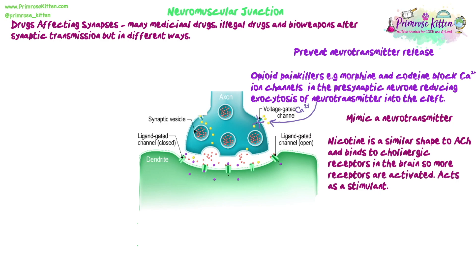Another example: instead of blocking a signal, drugs could mimic a neurotransmitter. Nicotine is a similar shape to acetylcholine, so it can bind to the cholinergic receptors. More receptors are activated if you have nicotine in your system than if relying on acetylcholine alone, so it acts as a stimulant — binding to more sodium ion receptors releases more sodium ions into the following neuron, making you more likely to generate an action potential.